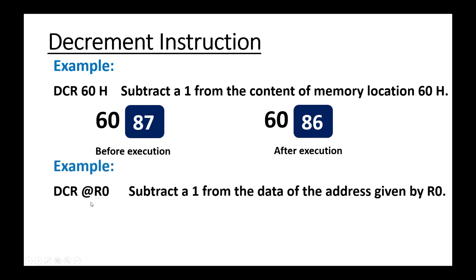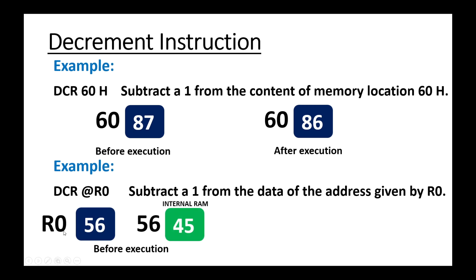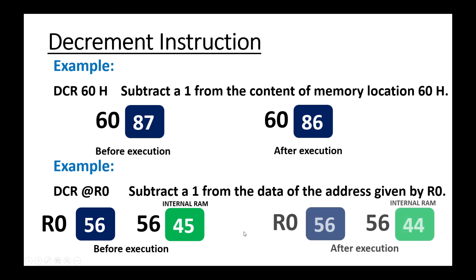Next instruction is DCR @R0. R0 is a pointer register, so it will subtract one from the data of the address given by R0's register. R0 is holding 56, which is the indirect address, so R0 is pointing to 56. At address 56, the value 45 is stored. After execution, the content of the address given by R0 will be decremented by one, so 45 becomes 44 and is stored in the same memory location.